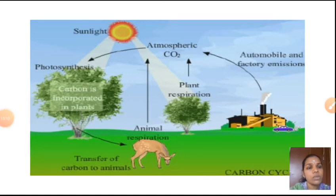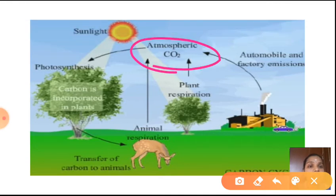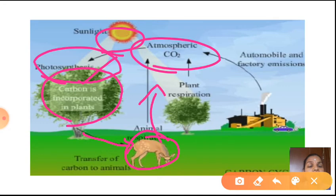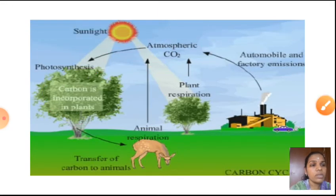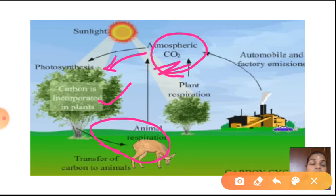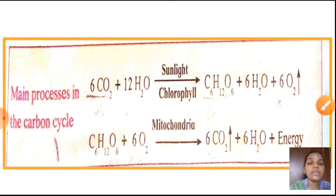This diagram shows the carbon cycle. This is atmospheric carbon dioxide. In the presence of sunlight, plants prepare their food — that process is called photosynthesis. Animals take energy from plants. When we respire, we release carbon dioxide back to the atmosphere, which plants take up again. This is the cyclical flow of carbon — the carbon cycle.